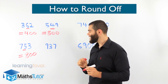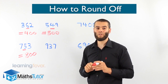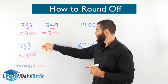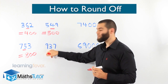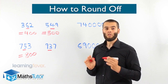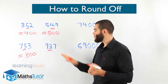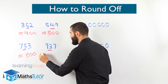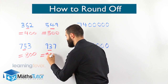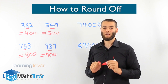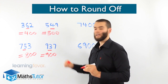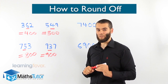Another example: nine hundred and thirty-seven, round off to the nearest hundred. We look to the number on the right of the hundreds column and ask, are you five or more? No — it's actually less. That means we have to round down. Nine hundred and thirty-seven to the nearest hundred becomes nine hundred. It doesn't have enough muscles to push up, so we round down.